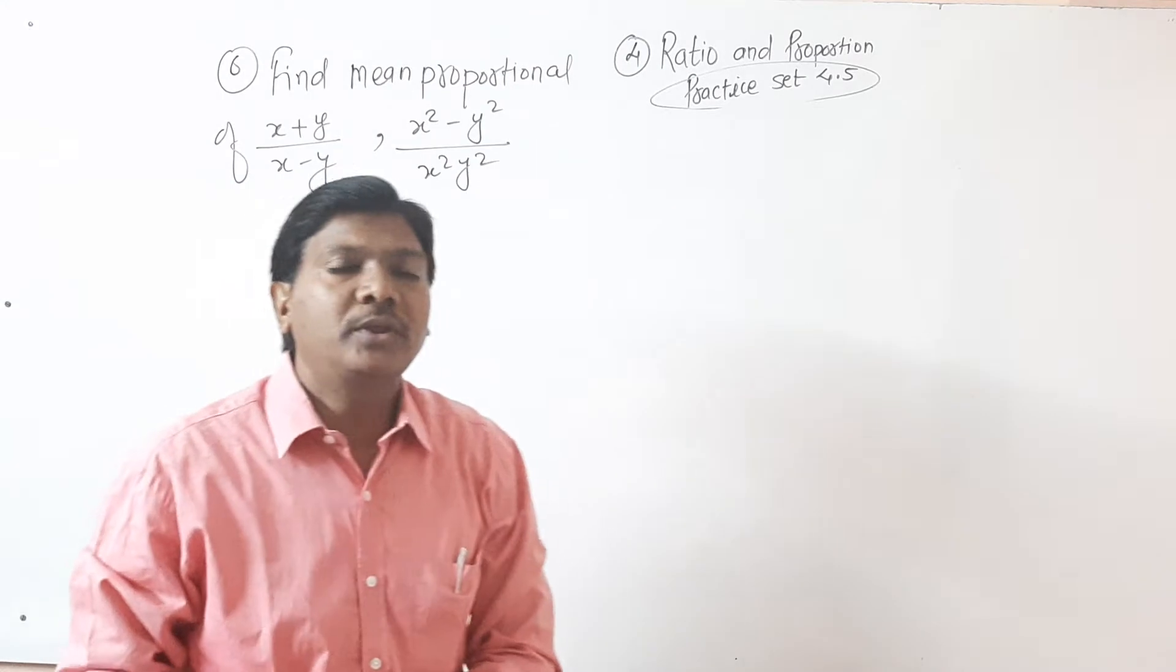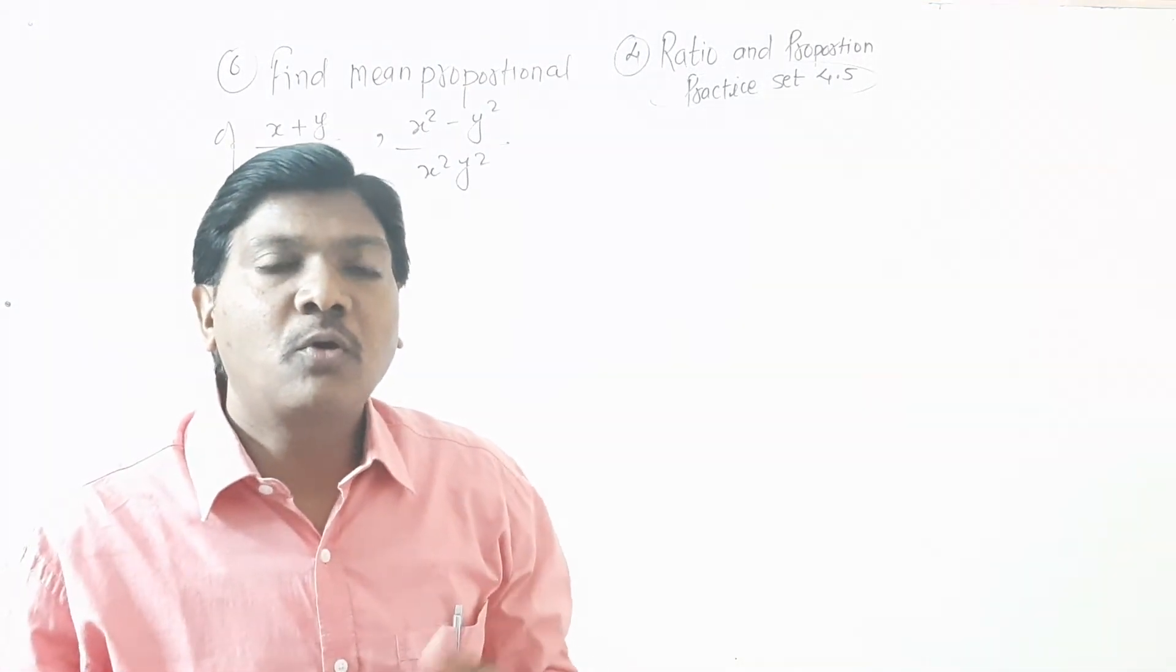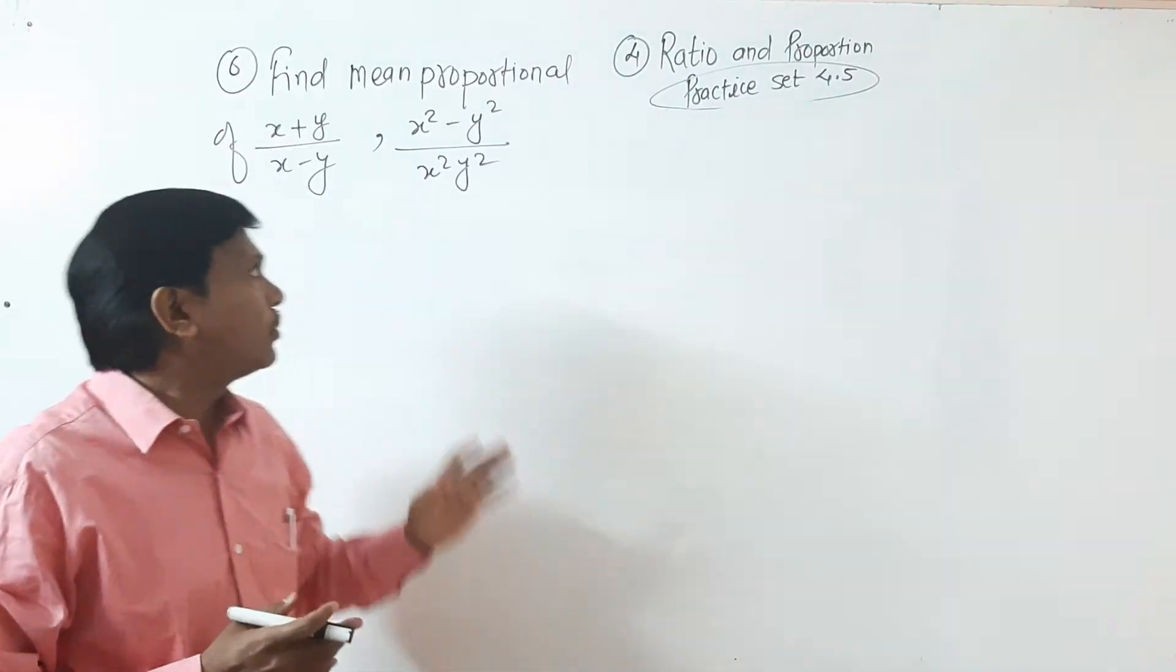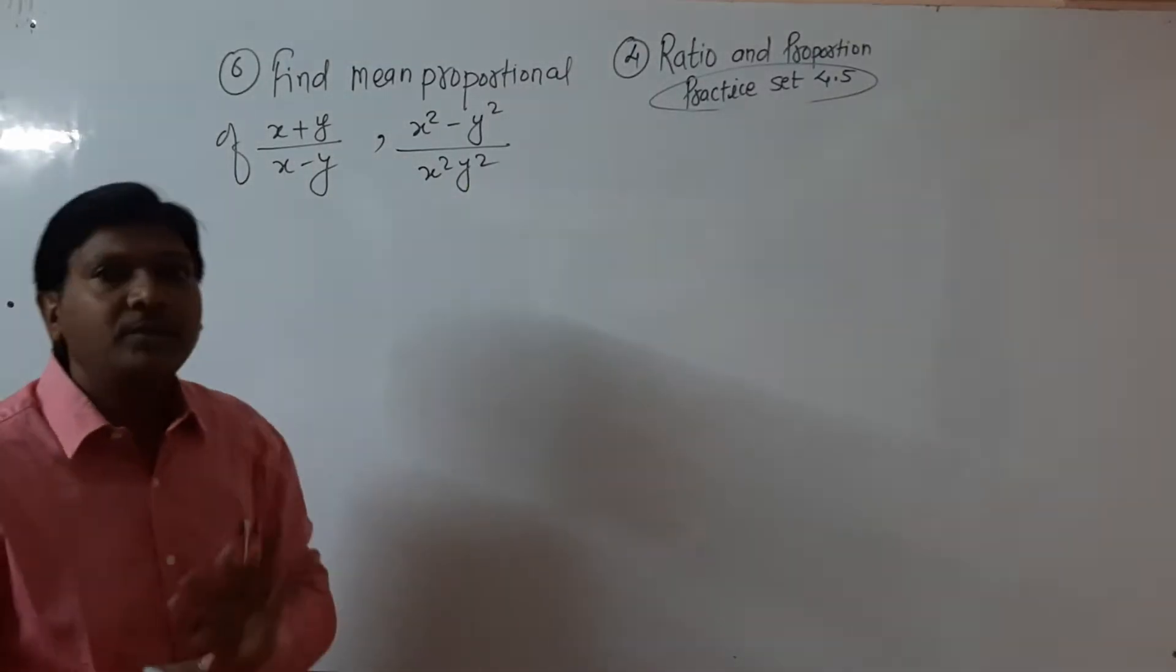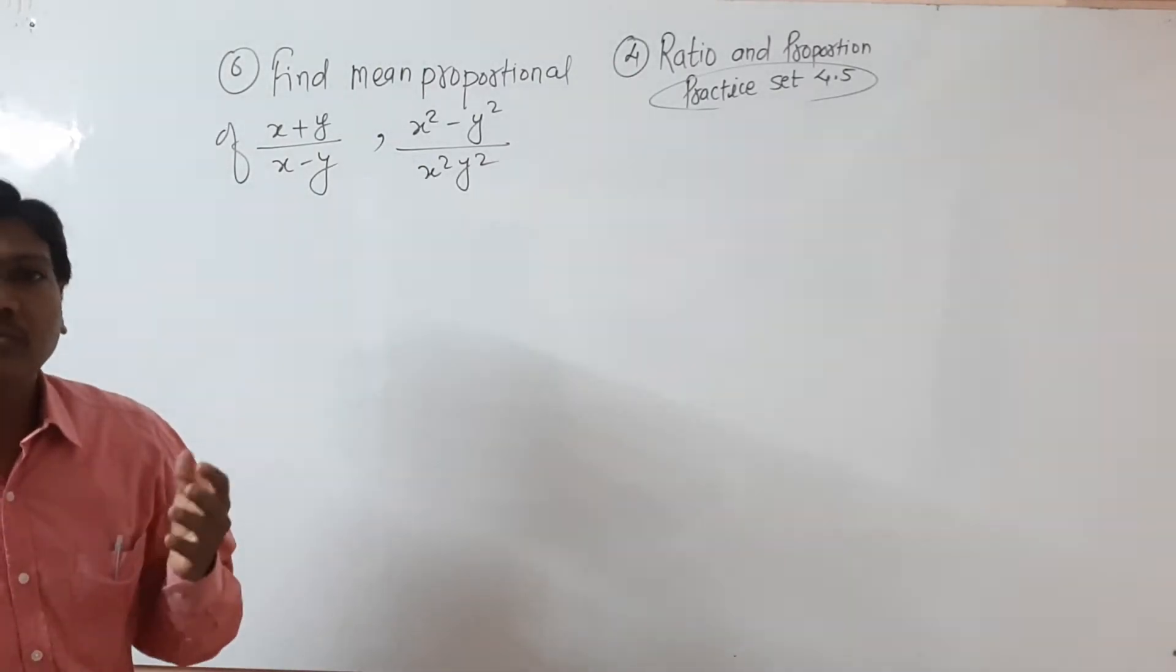You know if three numbers are in continuous proportion, we take the square of the middle one - that's the mean proportion - and it equals the product of first and third. So you can find mean proportional which is not given.